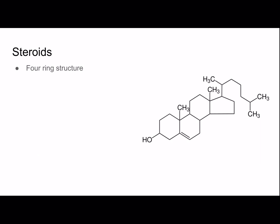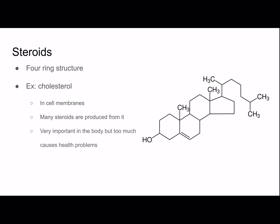Steroids have a four-ring structure, as you can see in the picture. An example is cholesterol, which is found in cell membranes and many steroids are produced from it. It's very important in the body, but too much will cause health problems such as clogging of arteries. Saturated and trans fats affect cholesterol levels, which is why they can be bad for health.